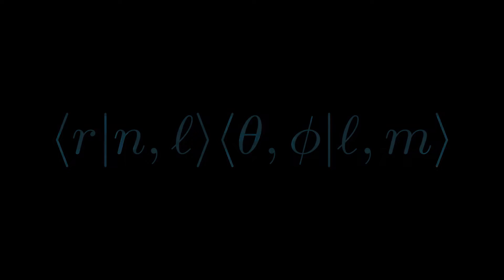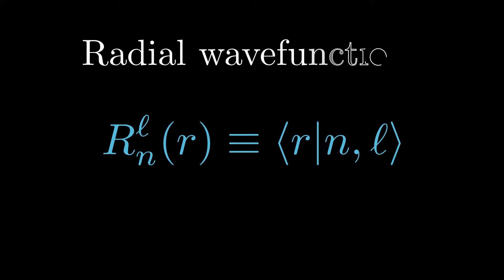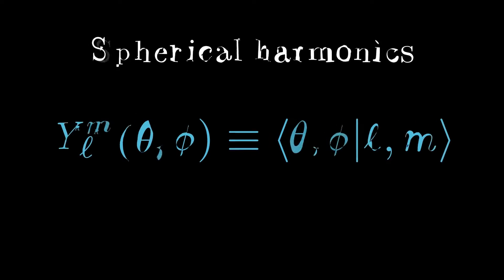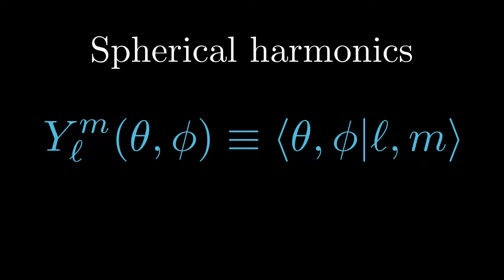We shall name the ⟨r|nl⟩ radial wave function and denote it with symbol R_nl. We shall name the ⟨θ,φ|lm⟩ spherical harmonics and denote it with symbol Y_lm. Beware that these superscripts do not mean exponent but labels the wave function.